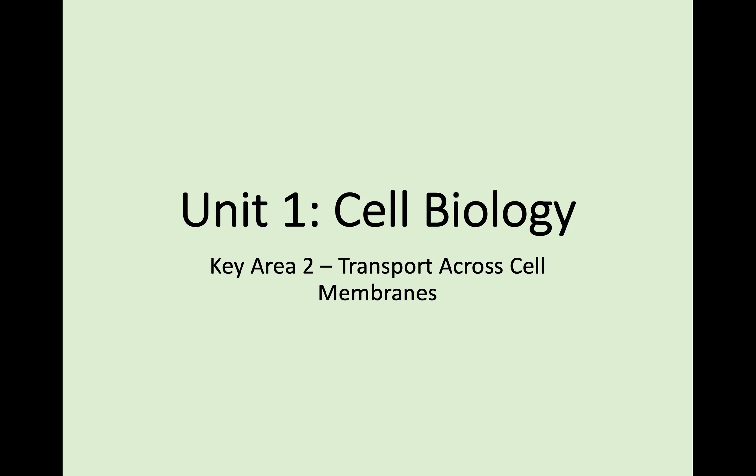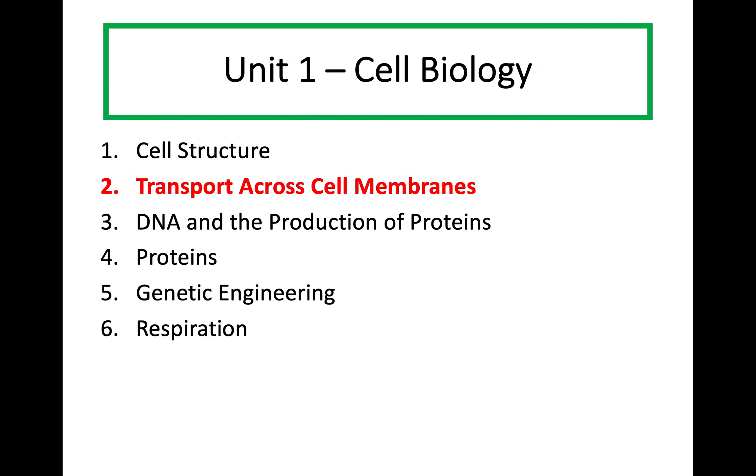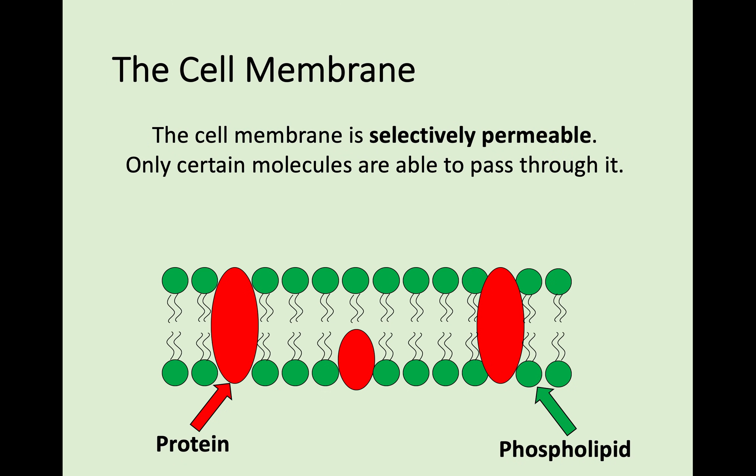Welcome back to National 5 Biology. We're staying with Unit 1 Cell Biology today and moving on to Key Area 2, which is transport across cell membranes. From Key Area 1 you should remember that all cells had a cell membrane. You should also remember the cell wall in some cells, that it was made of cellulose and was fully permeable. We said we would cover the cell membrane later, and today we're going to do that.